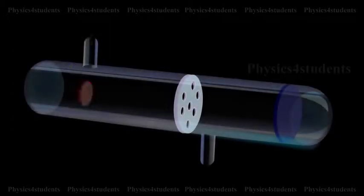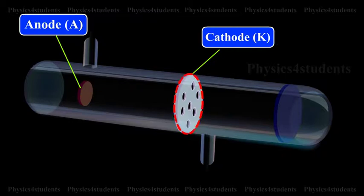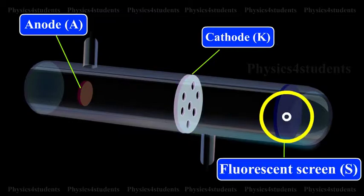The tube contains an anode A, a perforated cathode K, and a fluorescent screen S.